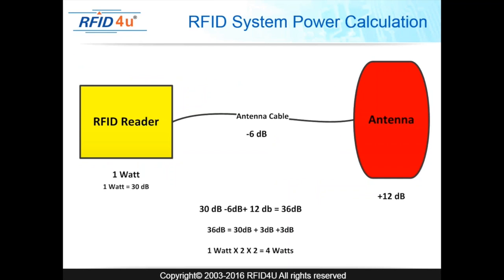As an example: if a reader outputs one watt of power — the maximum allowed under FCC regulations — one watt equals 30 decibels. If the antenna cable has a loss of 6 dB and the antenna boosts the signal by 12 dB, the formula is: 30 dB minus 6 dB plus 12 dB equals 36 dB. Breaking that down: 30 dB is 1 watt, plus 3 dB doubles it, plus another 3 dB doubles it again — so the system outputs 4 watts, or 36 dB.